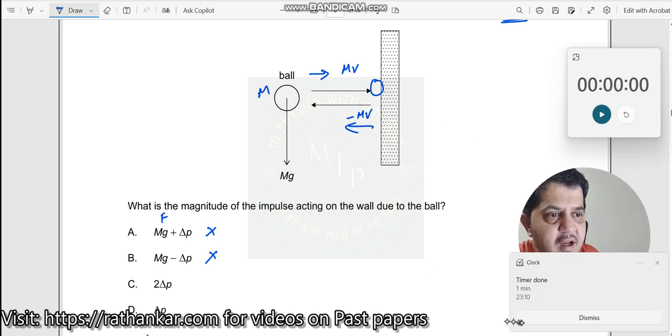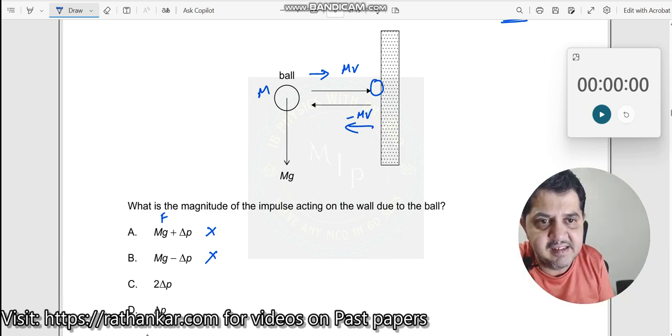It says impulse. What do you mean by impulse? Impulse is nothing but it tells you what is the change in momentum. So here when I take something like this, we do not know whether velocities are same, velocities are different, nothing is clear to us.